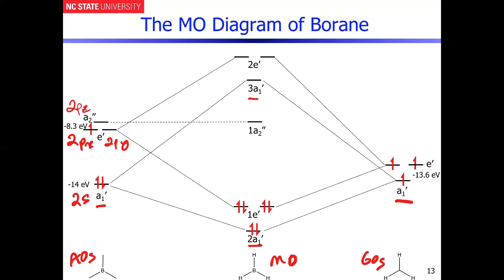Because it's non-bonding, we know that it has the character of the Pz atomic orbital from boron. That empty orbital belongs exclusively to boron in this picture.